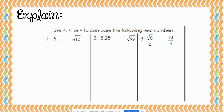Our first problem is comparing the number 5 to the square root of 10. If we take the square root of 10 and change that into a decimal, the square root of 10 would be approximately 3.16. If I look at 5 and compare it to 3.16, I know that 5 is greater. So 5 is greater than the square root of 10.